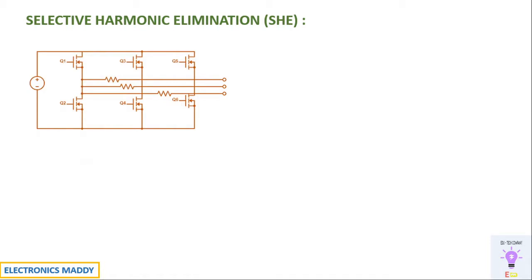This is a circuit diagram of a three-phase voltage source inverter. I've already performed the simulation of a three-phase voltage source inverter in 180-degree mode in one of our previous videos, and I will be extending that to demonstrate how to perform selective harmonic elimination for this particular circuit. The link will be provided in the description.